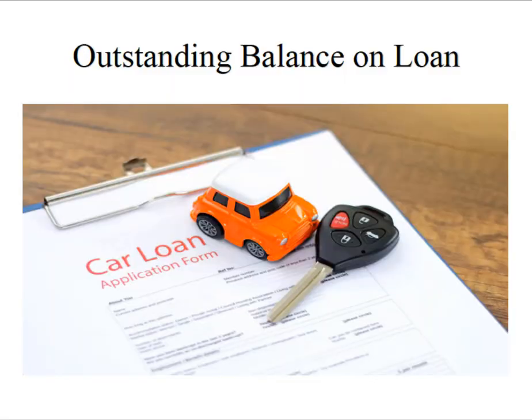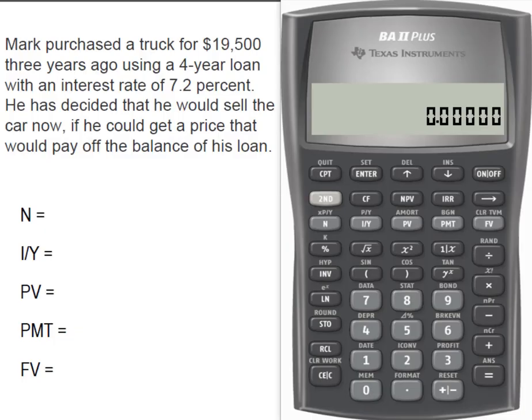Hey everybody, it's Professor Williams. Today we're going to use the time value of money to determine the outstanding balance on a loan. Mark purchased a truck for $19,500 three years ago using a 4-year loan with an interest rate of 7.2 percent. He's decided that he's going to sell the car now if he can get a price that will pay off the balance of his loan.